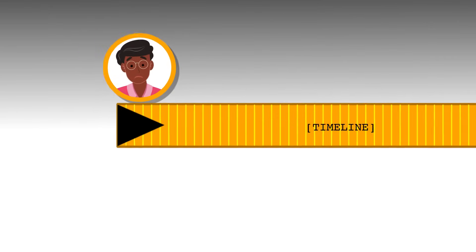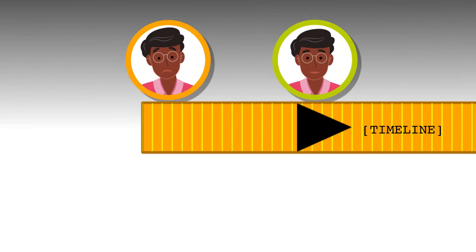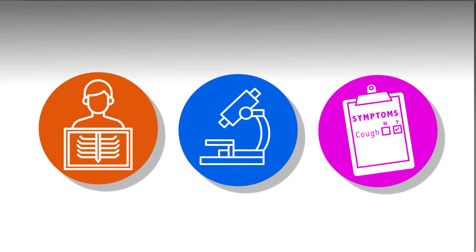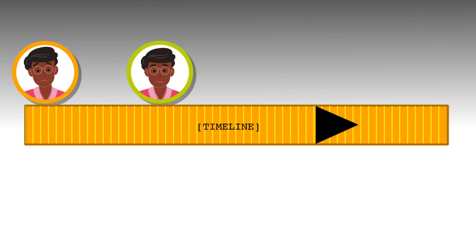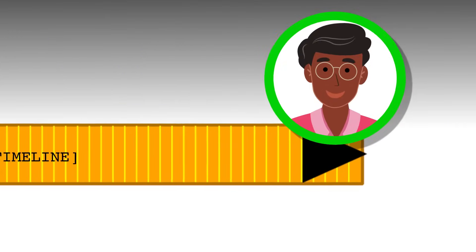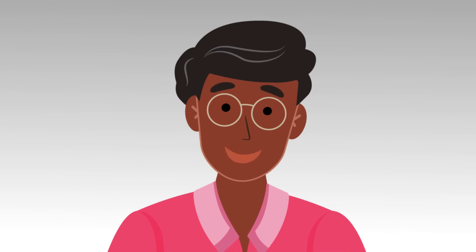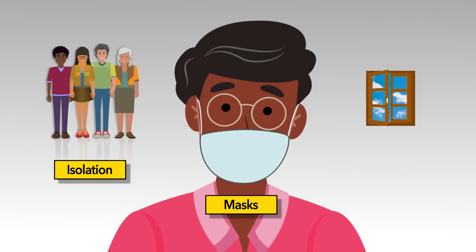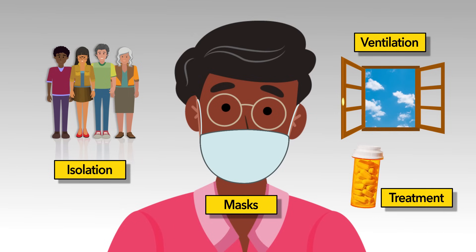TB is treatable and curable with the right medications. Arun's health care provider will discuss the best options for treating his TB. Most patients with TB will start feeling better early in their treatment and will be less likely to spread TB to others — a health care provider will perform tests to be sure. Even after he is no longer spreading TB, Arun needs to continue taking all of his medicine for the full length of his treatment. If he stops before his health care provider says it's okay, he may become sick and start spreading TB again. The health department can provide support to help Arun get through his treatment. Arun now feels more confident in his ability to protect others using isolation, masks, and ventilation, and will follow his health care provider's advice to complete all of his treatment.